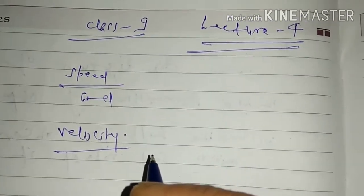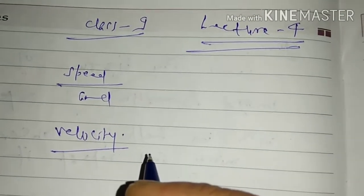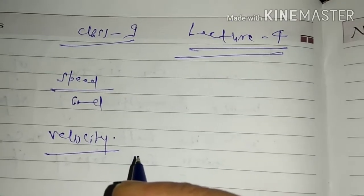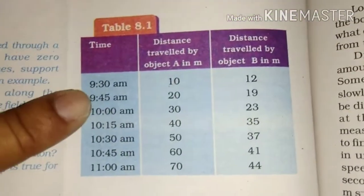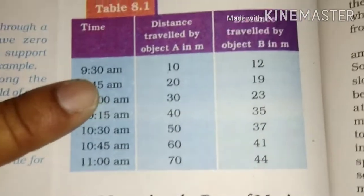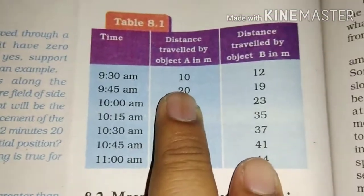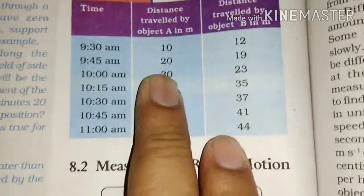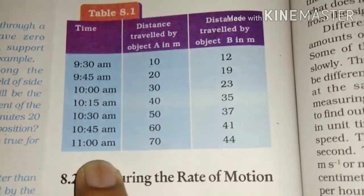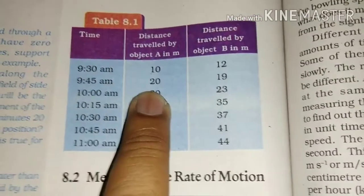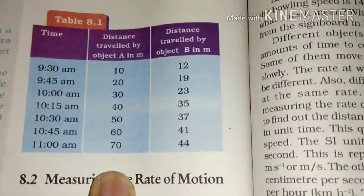I had also given you data and asked you to see table 8.1 on page 100 of NCERT. In this table, it is clearly shown that if a person starts their journey at 9:30 a.m., the distance travelled from any point is 10 meters, and after every 15 minutes the person is travelling an equal distance of 10 meters.